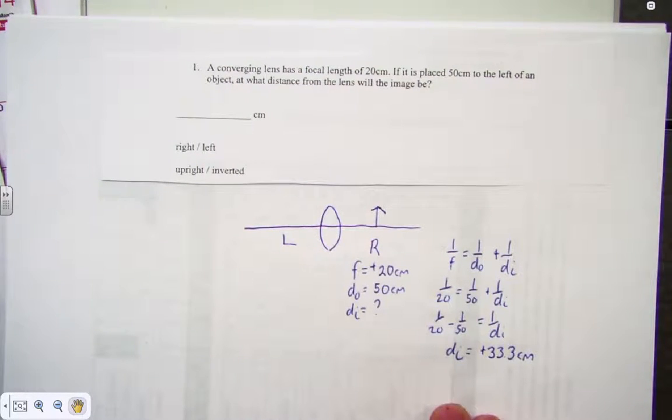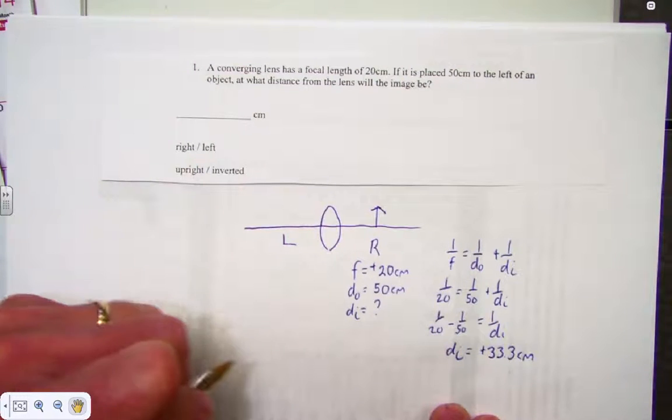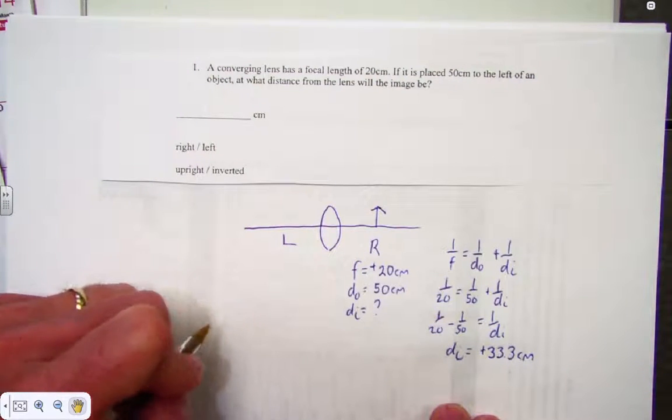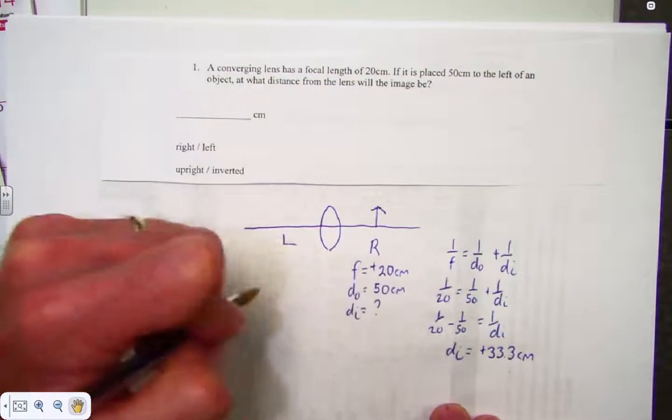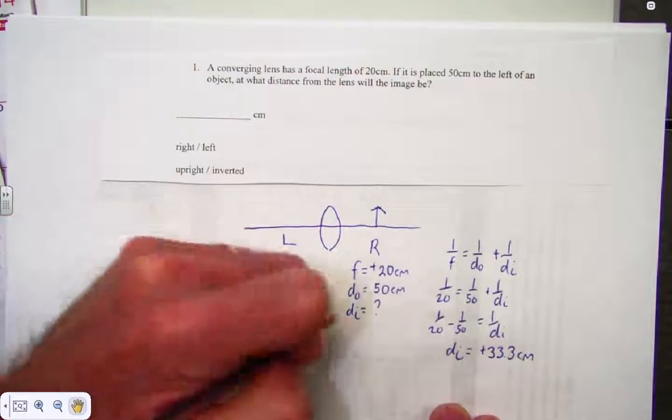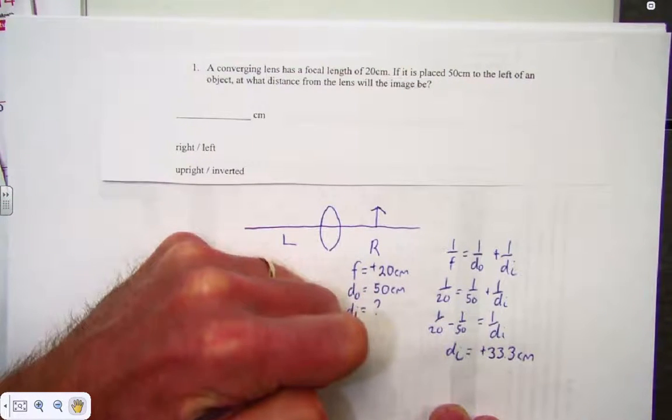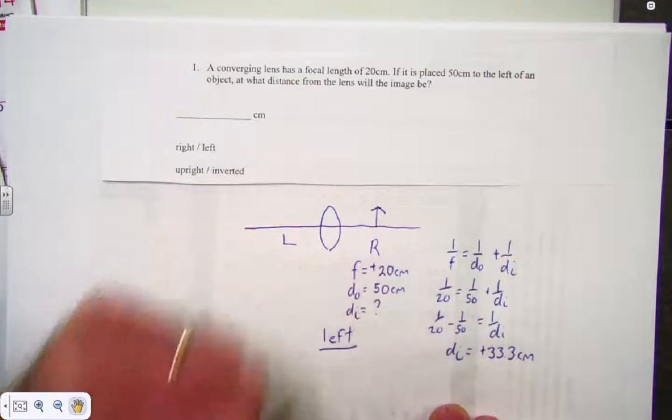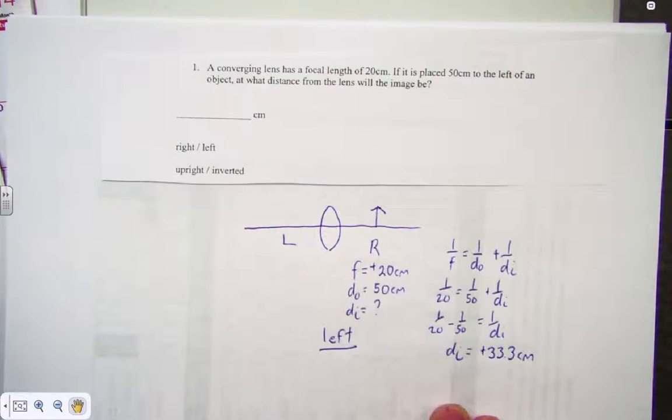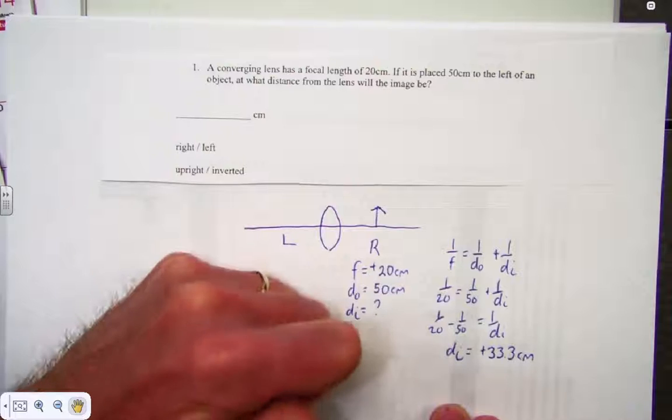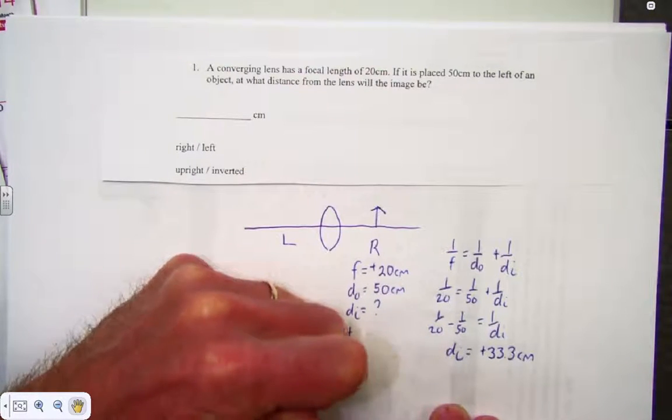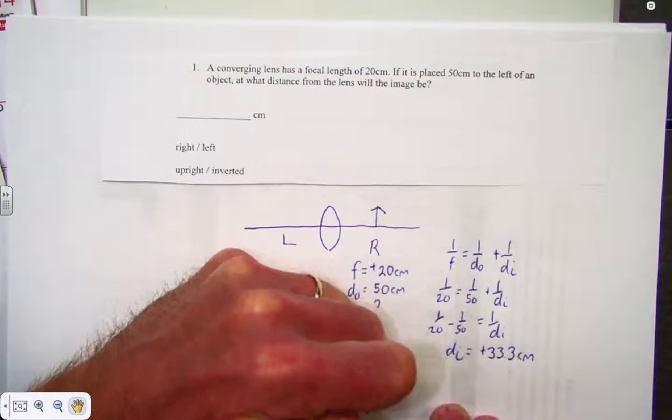That positive connection tells you a lot of things. A positive di means the image will be on the opposite side of the lens as the object. So the object's on the right-hand side, the image will be located on the left. And when something is located on the opposite side of the lens of the object, it is real, and the real images are always inverted.